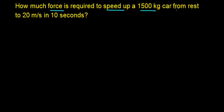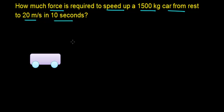In this video, we're going to try to figure out how much force is required to speed up a 1,500 kg car from rest to a final velocity of 20 m per second in 10 seconds. Before we begin, let's draw a picture to see what's actually happening within this problem. This car is going to start with an initial velocity of 0 m per second — that's what it means for an object to start from rest.